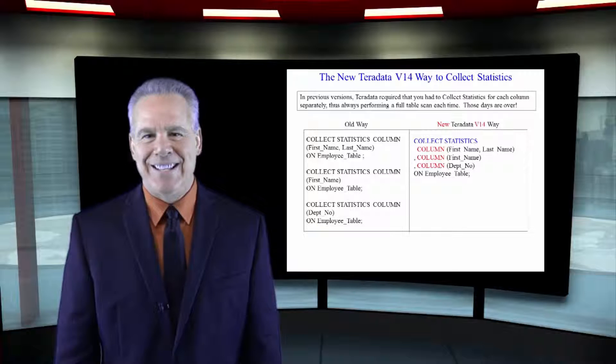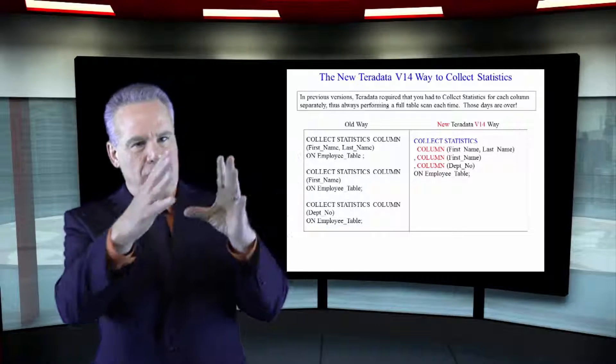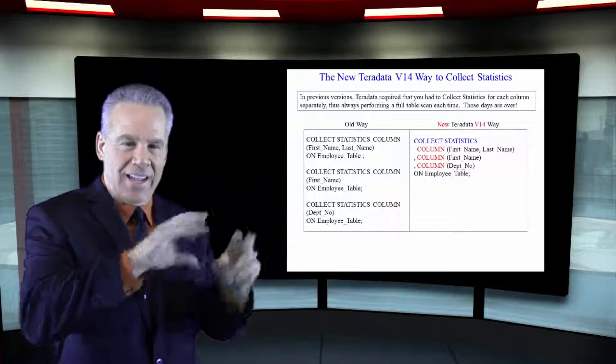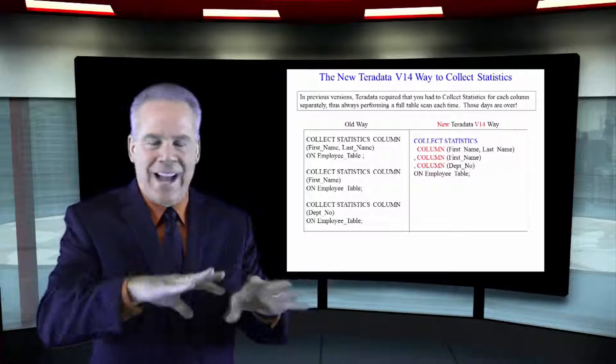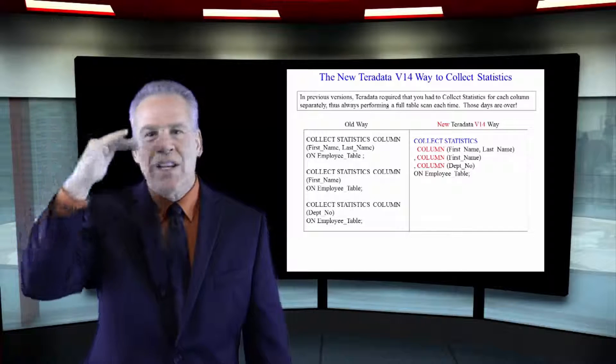One thing that never made any sense to me is that you would always collect statistics on this column, and it would run. And then you'd collect statistics on this index, and it would run. And then these combined columns, and it would run. You had to do all the statistics separated,